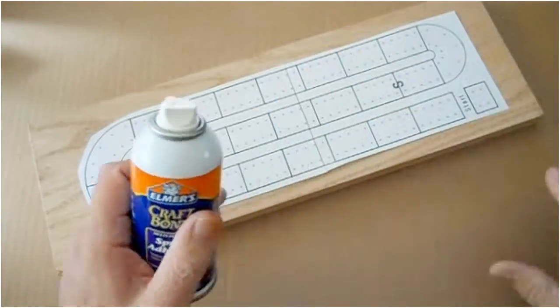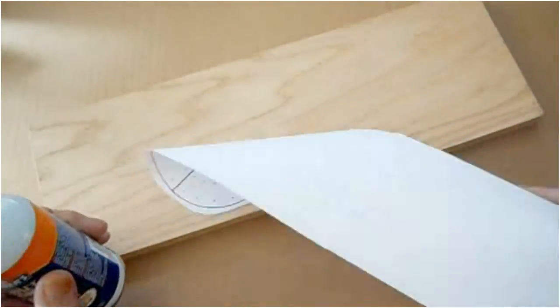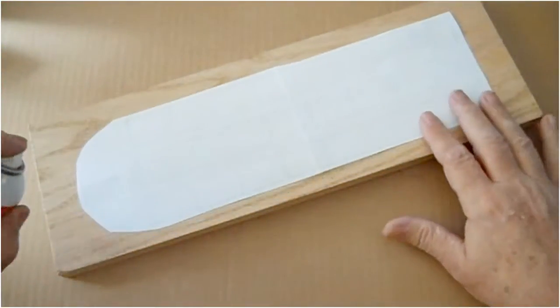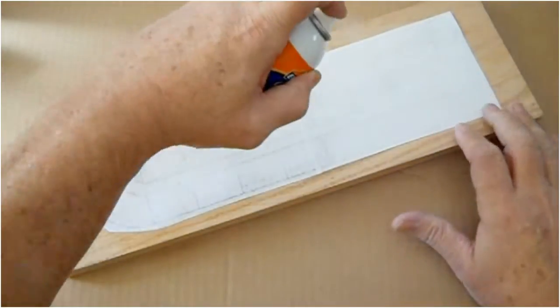The next step is to glue the pattern to the wood. I chose to use a white oak board I bought from my local hardware, and I'm going to cement the pattern to the wood with spray-on cement.